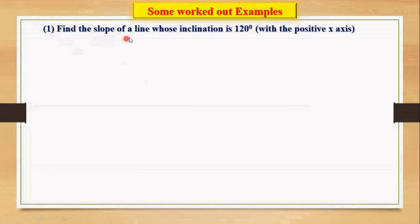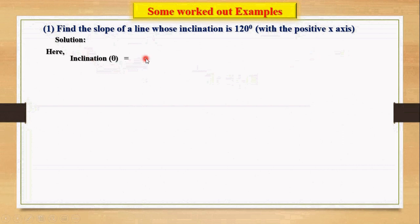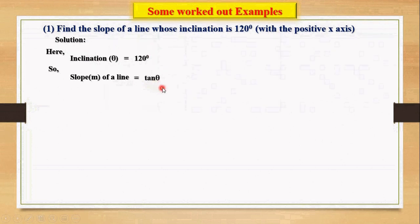Example 1: Find the slope of a line whose inclination is 120 degrees with the positive x-axis. Here, inclination theta is 120 degrees. We know slope m equals tan theta, so m equals tan 120 degrees, which equals minus root 3. This is the slope of the line.